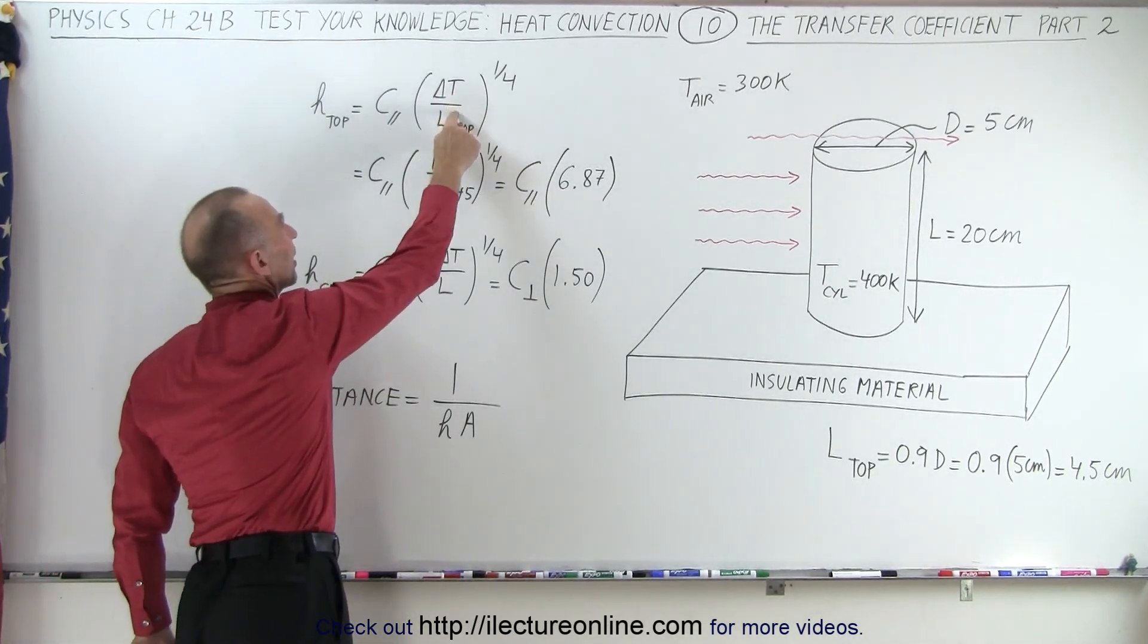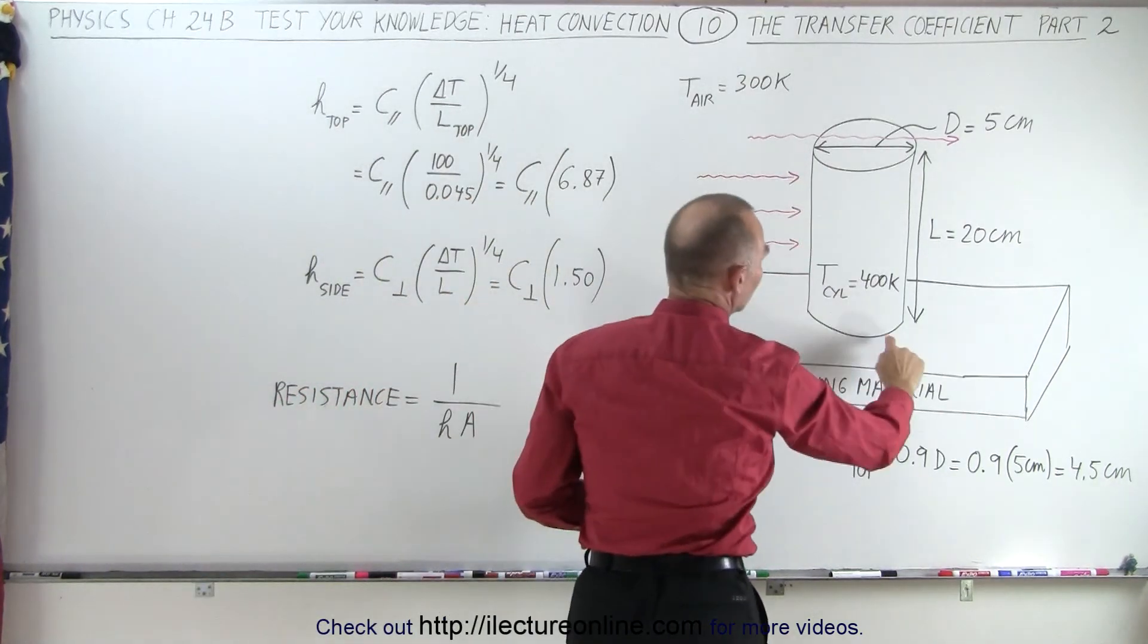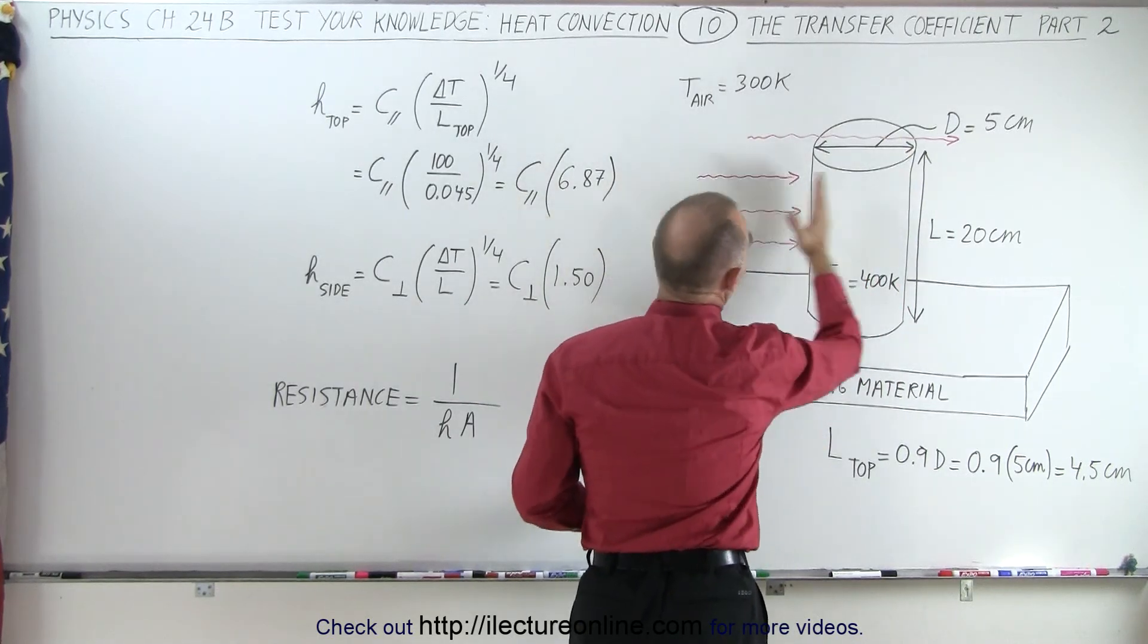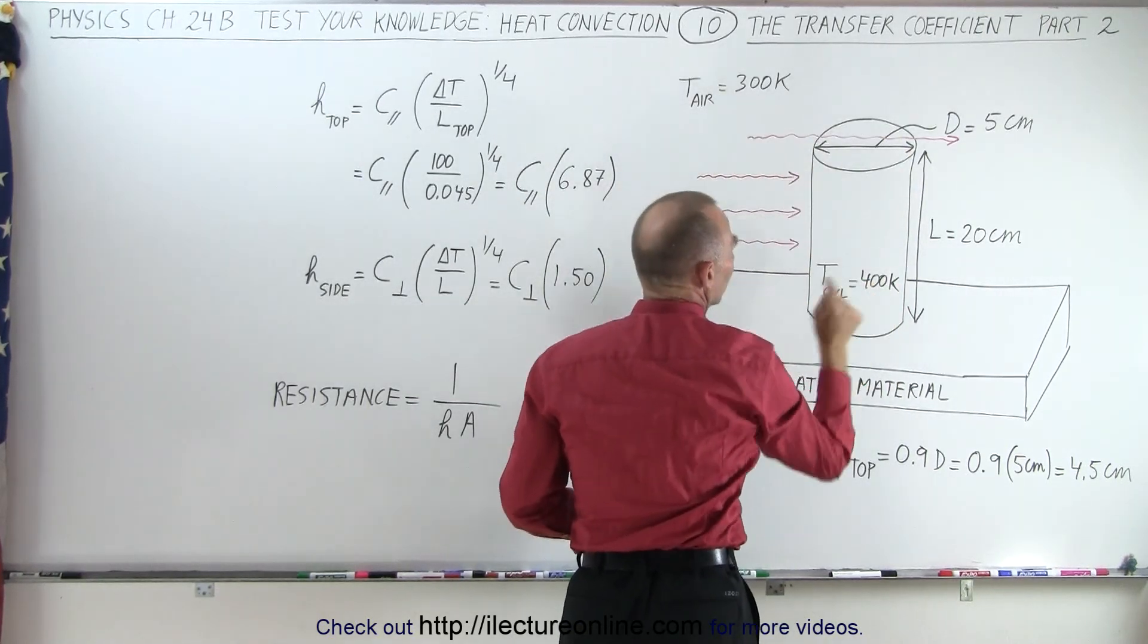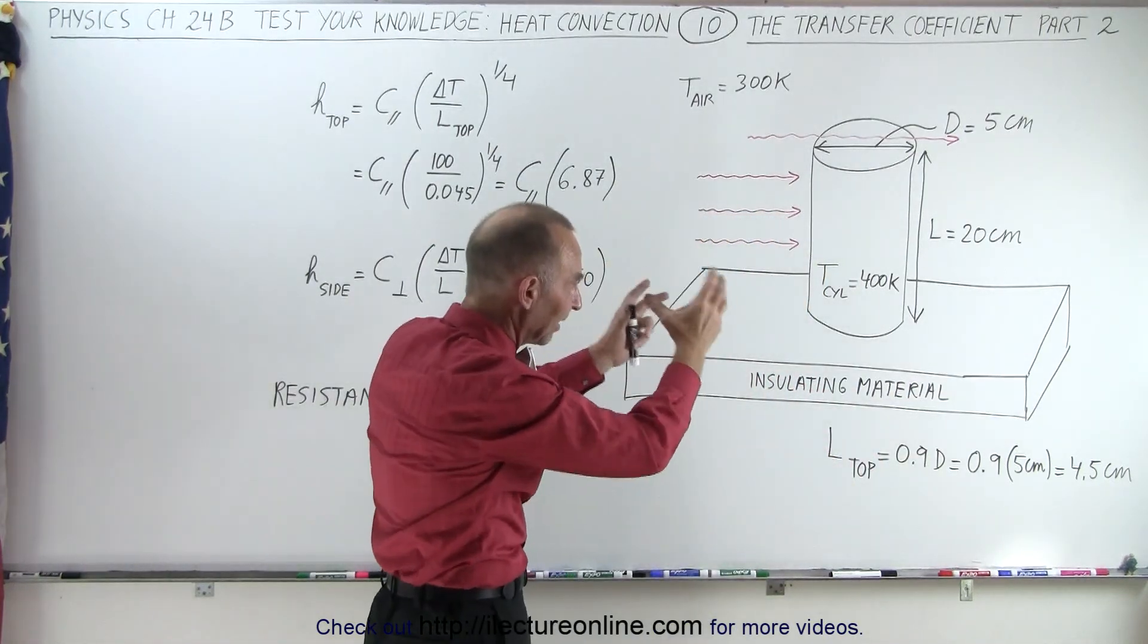Notice that we have a delta T divided by L. Now in this case, we have a cylinder, which is 20 centimeters tall with a diameter of 5 centimeters, which is subject to airflow at 300K while the cylinder is at 400K. At the bottom here, there's an insulating material to isolate the situation.